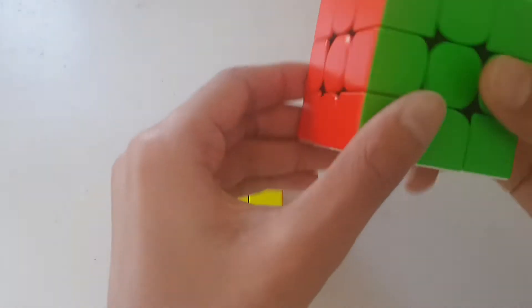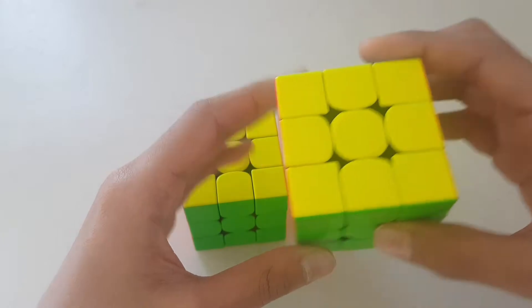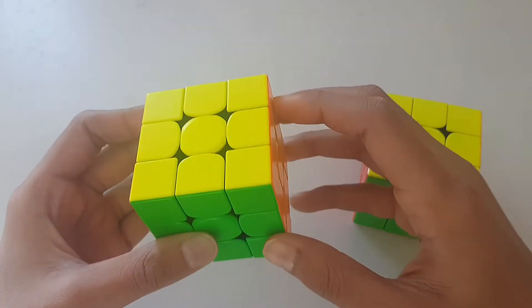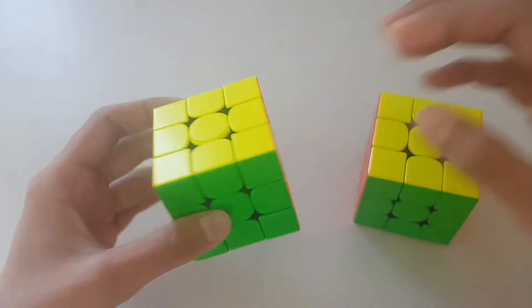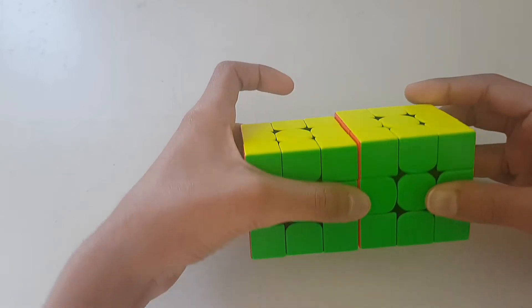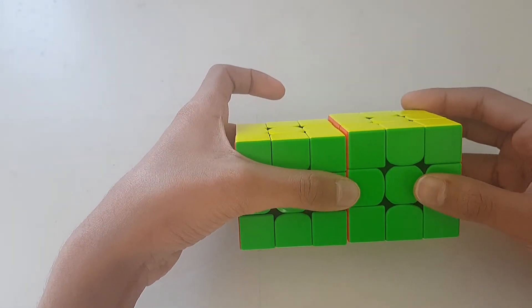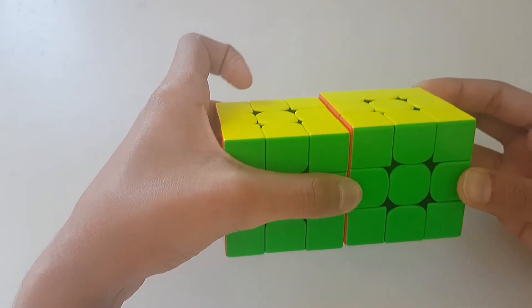This is a GAN 356 Axis which is 56 millimeter and this is a GAN 354 Version 2 which is 54 millimeter. Both these cubes have a 2 millimeter difference, the Axis being the larger, and it's a small difference you guys can notice.